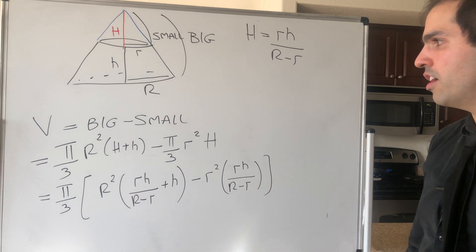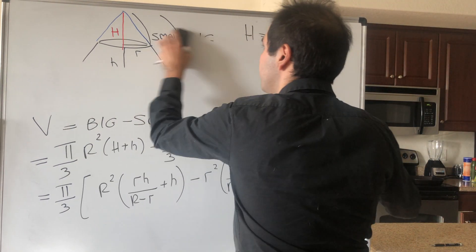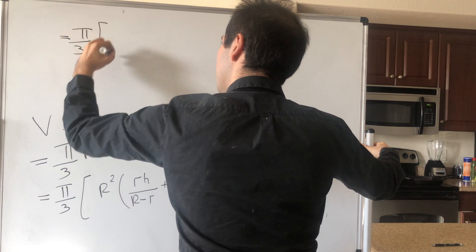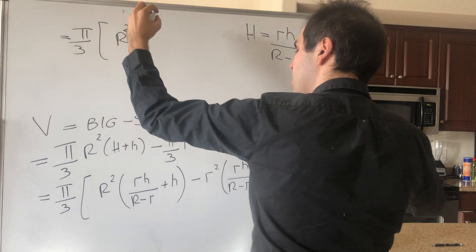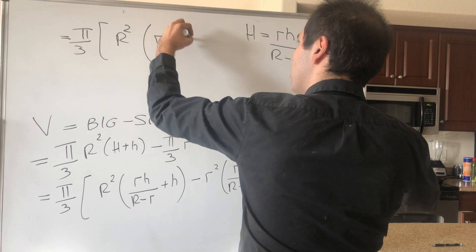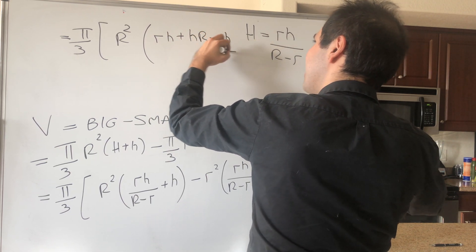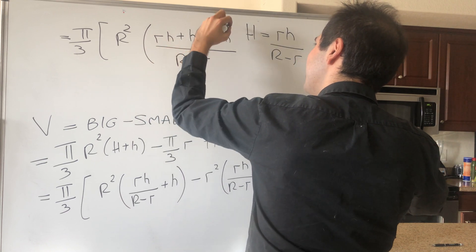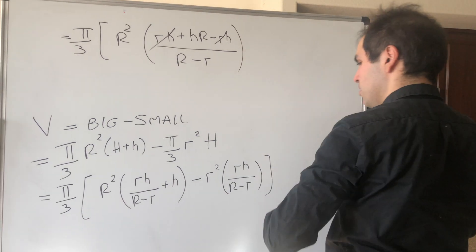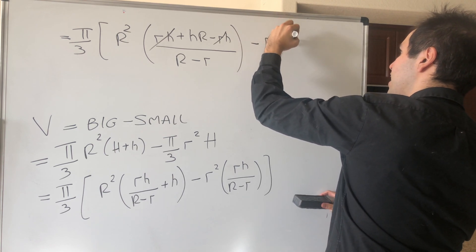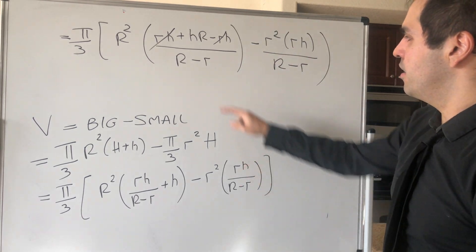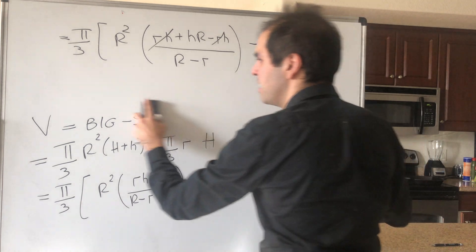Well, let's just put everything under a common denominator. So this becomes pi over 3, and then R squared. And then what we get is rh plus h times (R minus r), so hR minus rh. This cancels out, and then minus r squared rh over (R minus r). And then, the nice thing is there's this common factor of (R minus r), which comes out.